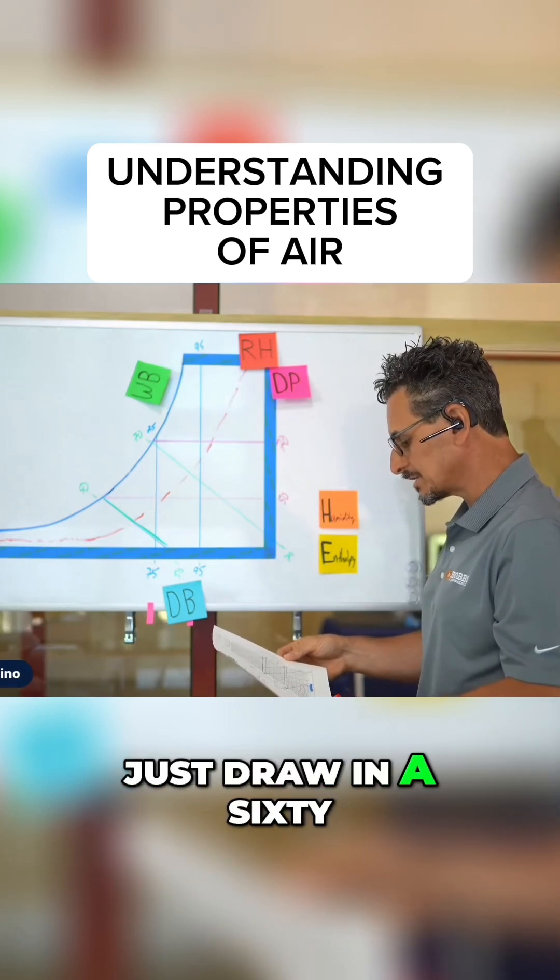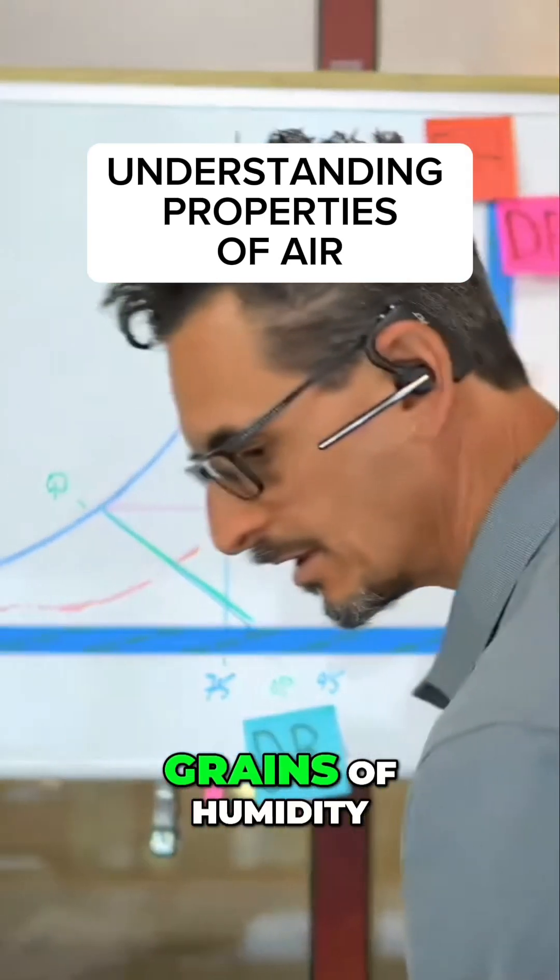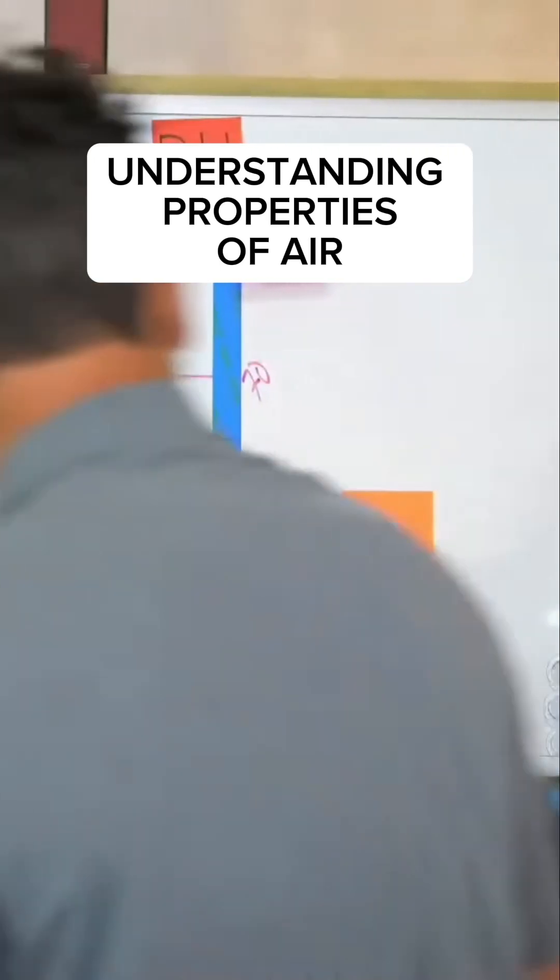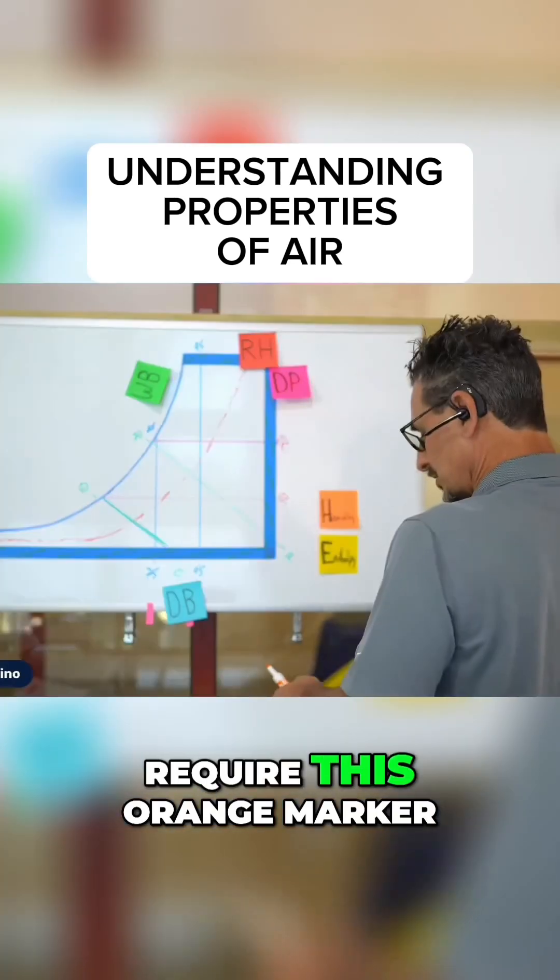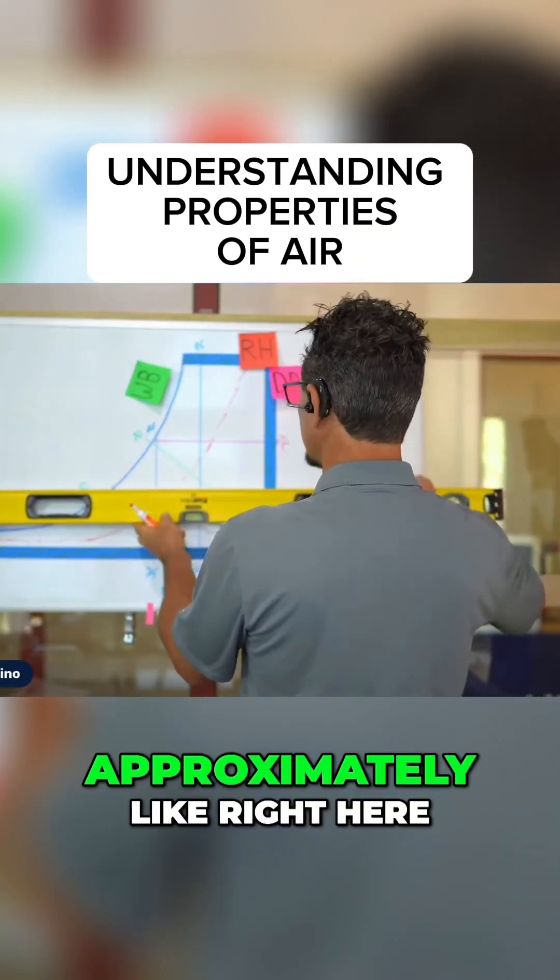We're going to just draw in a 60 and a 120 grains of humidity, which is going to require this orange marker. And I know that it's going to be approximately like right here.